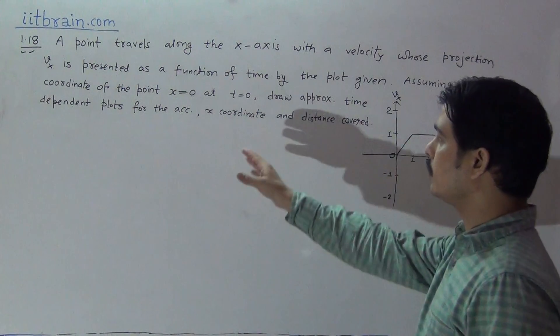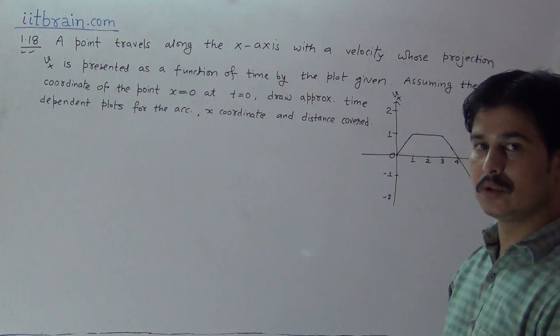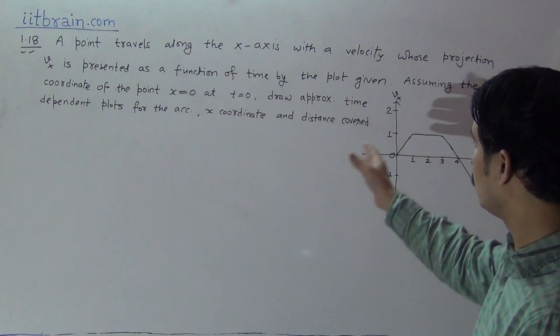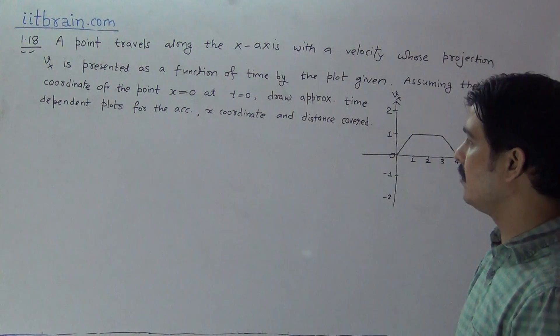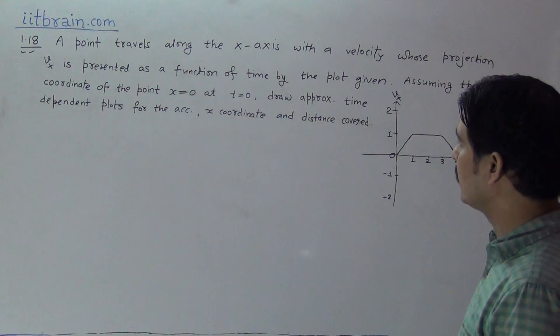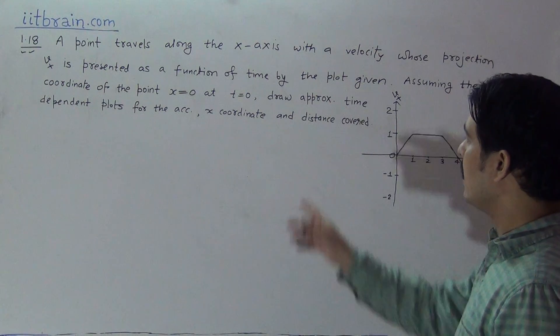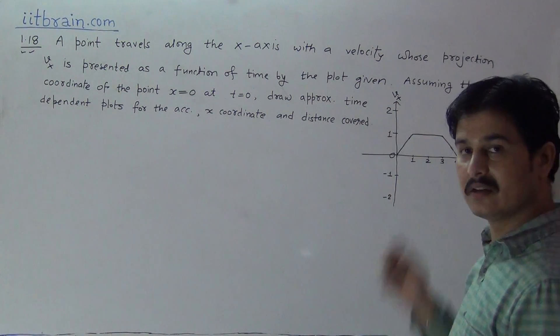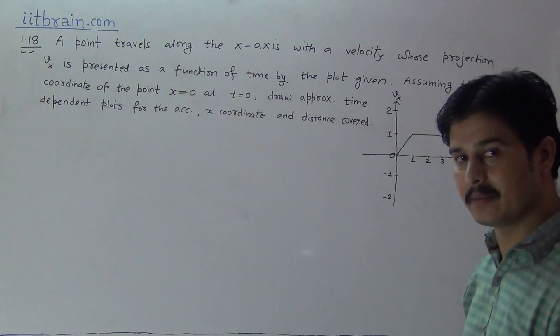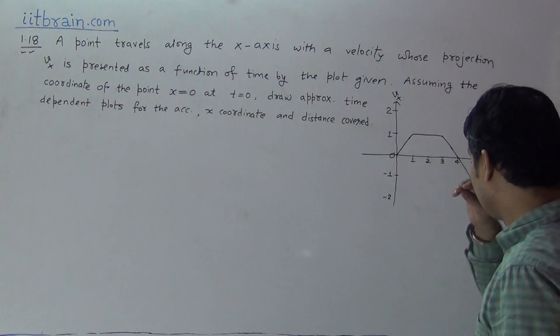Assuming the coordinate of the point x equal to 0 at t equal to 0, draw approximate time-dependent plots for the acceleration, x-coordinate, and the distance covered by the particle.